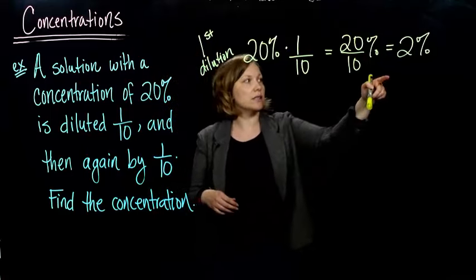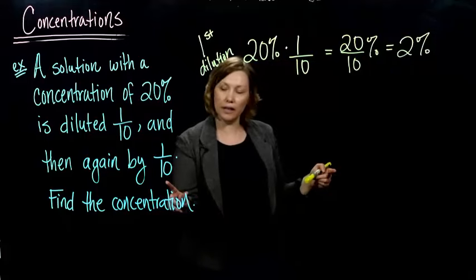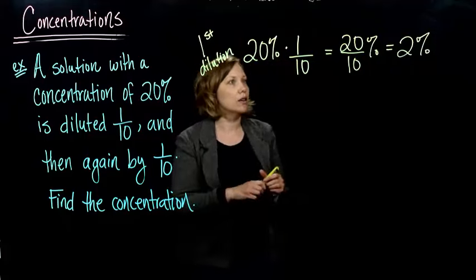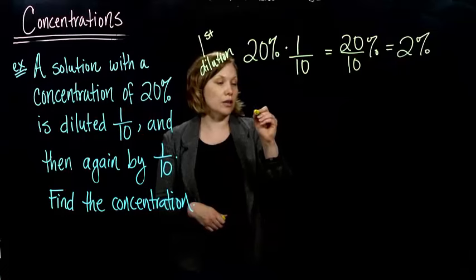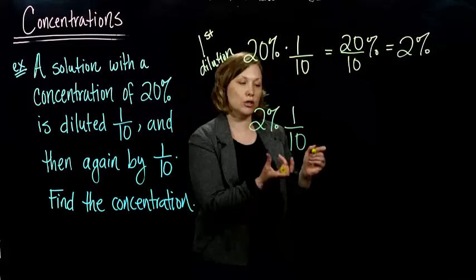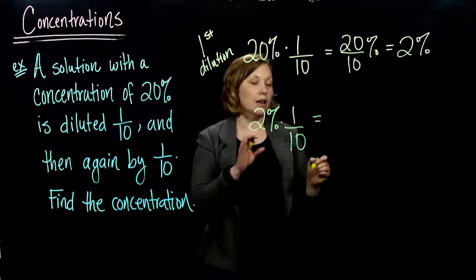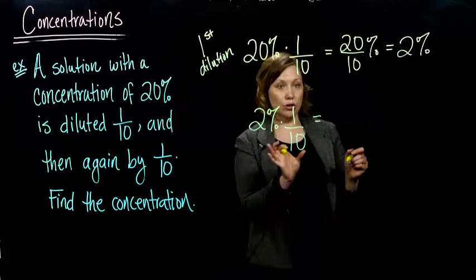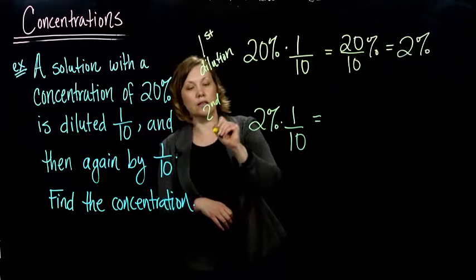And now we're going to take this 2% and dilute it by 1 to 10 again. Again, we can find our new concentration: 2% times 1 tenth is going to be our new concentration. This is the second dilution.